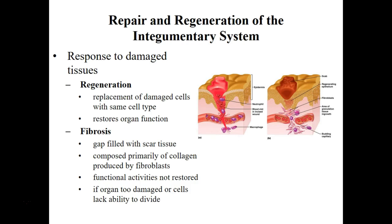What happens when tissue is actually damaged? Two things can occur depending on the severity. Our integument will regenerate — regeneration restores full function because you replace cells with the same exact cells. Whereas if the damage is too great, you're going to produce scar tissue, which is called fibrosis. Scar tissue is a form of connective tissue that fills the gap so you don't have a hole in your epidermis, but the function of that region changes because you don't have the same cells, structure, or function.